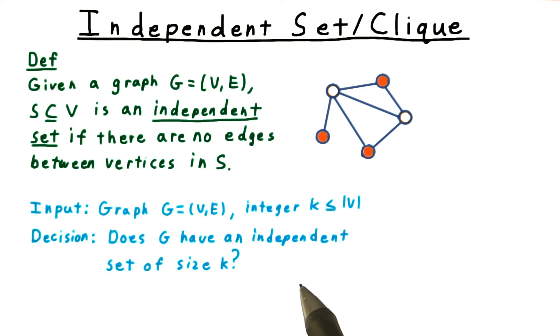Or, phrased as a decision problem, the question becomes: given a graph G and an integer K, at most the number of vertices, does G have an independent set of size K? Note that this problem is in NP.